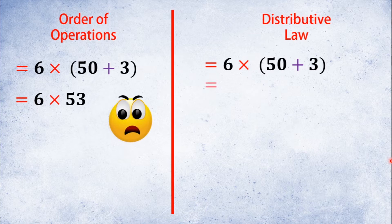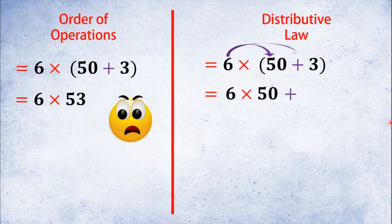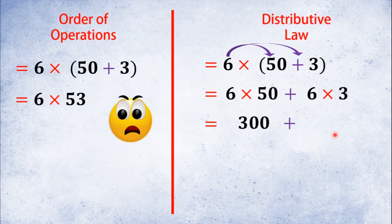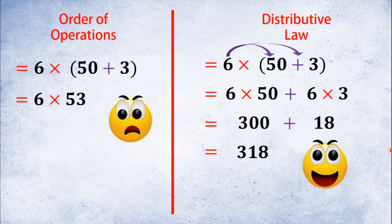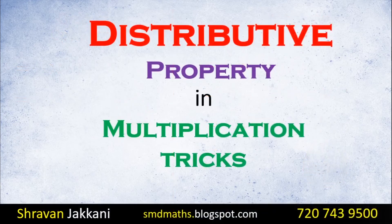What do I do? I am going to multiply 6 by 50 and 3 separately. So: 6 times 50, plus 6 times 3. If 6 times 50 — 6×5 is 30, so 6×50 is 300. And 6×3 is 18. So we are going to add 300 and 18 to get 318.